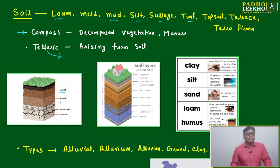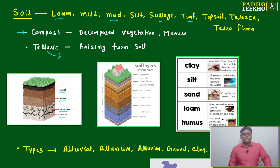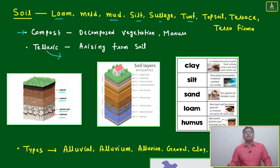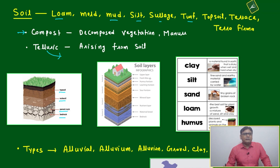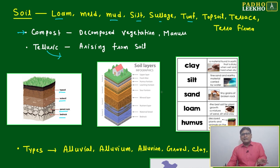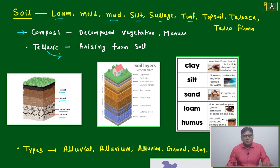When you cut a cross-section of the soil, remember these four layers: topsoil, subsoil, parent rock, and bedrock. Sometimes clues like 'upper layer' or 'leaching origin' are given — don't get confused. Understand that these terms refer to soil or just below the soil surface.